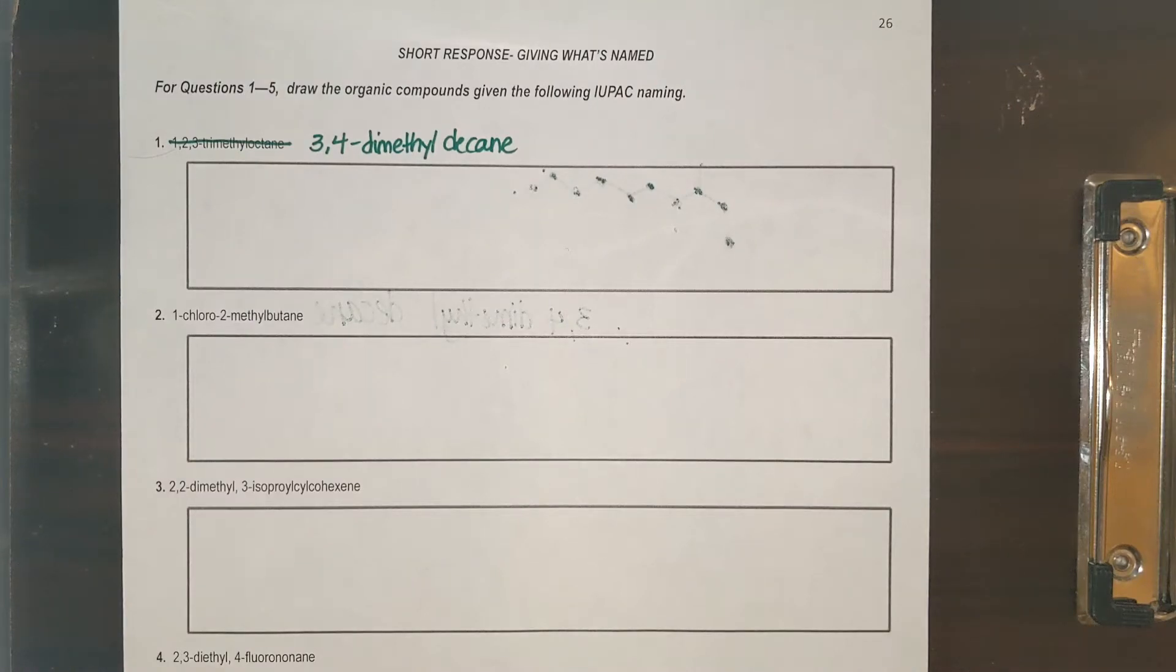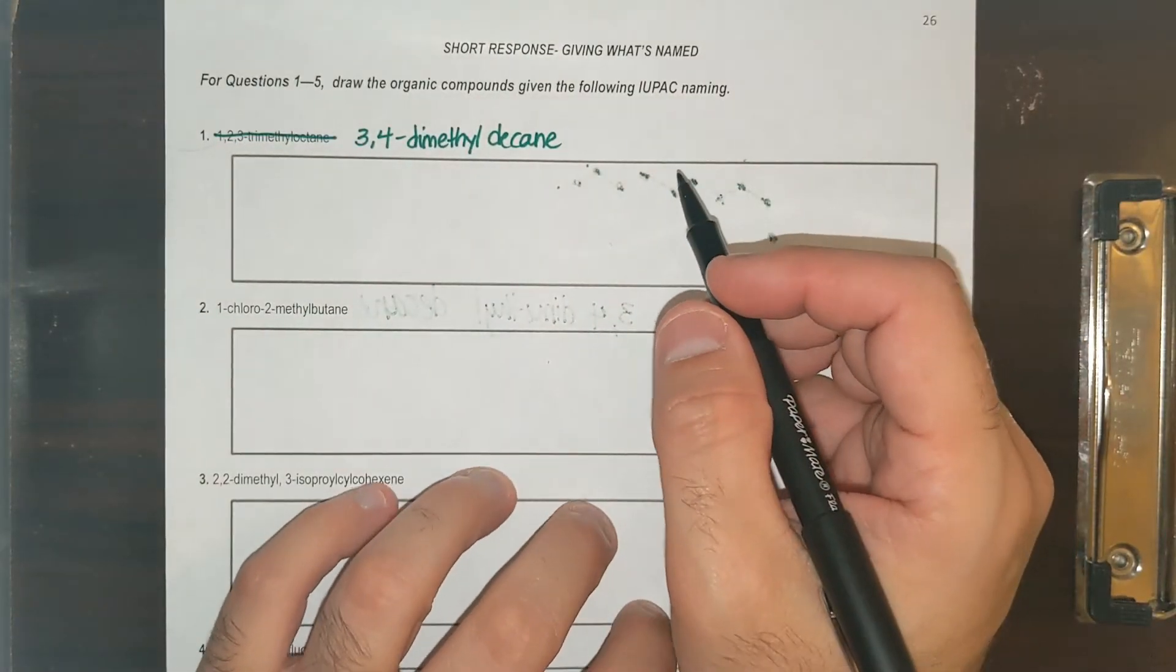Alright, hey organic chemistry. So we're going to jump to page 26 and we're going to do the opposite of what we've been doing in class, which is instead of naming organic structures, now we're going to go from the name to drawing them. So this is backwards. This one is actually a lot easier than what we've been doing.